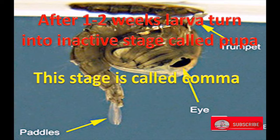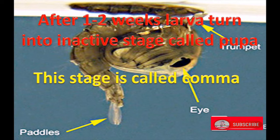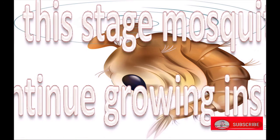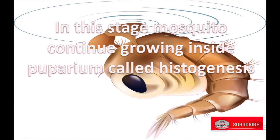This stage is called a tumbler. In this stage it remains inactive on the surface of water and takes in atmospheric air through a trumpet. Its body has a grown eye, thorax, and abdomen. Paddles help it to float on the water. In this stage the mosquito continues growing inside the puparium, which is called histogenesis.